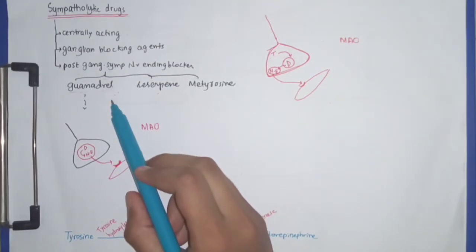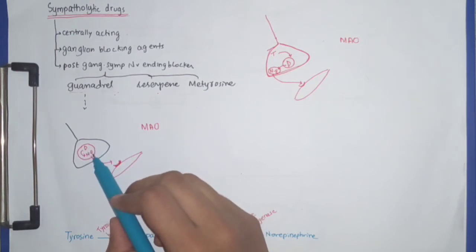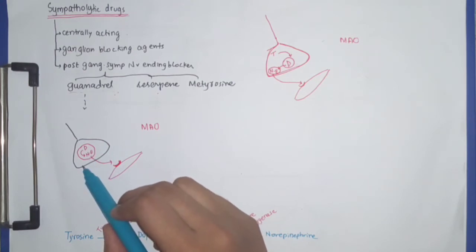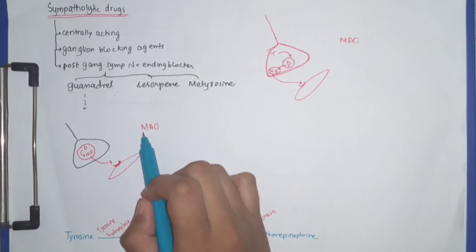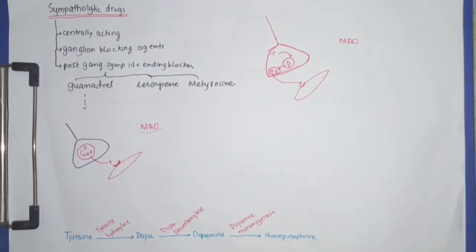What happens is guanethidine accumulates in the storage vesicle, and when this accumulates, norepinephrine leaks out. It is then destroyed by an enzyme system which physiologically exists, known as monoamine oxidase. This enzyme destroys norepinephrine once it is out of the storage vesicle.